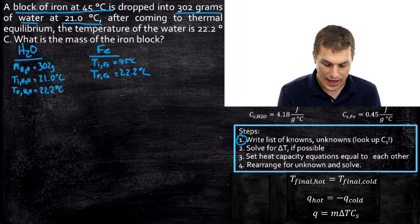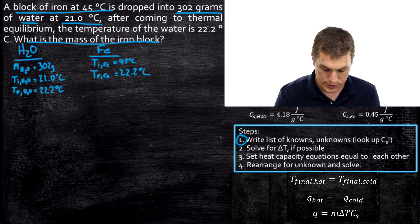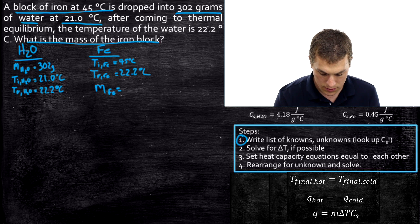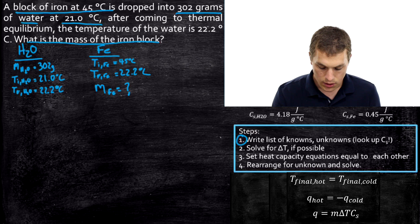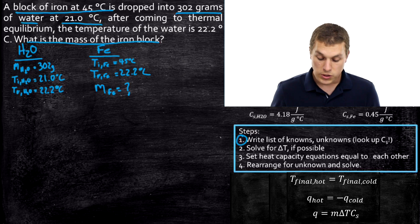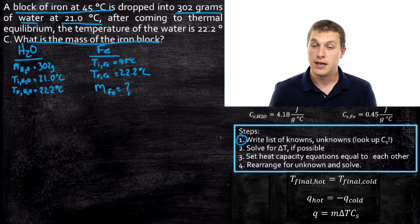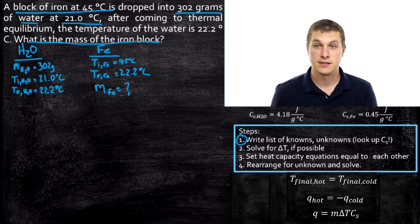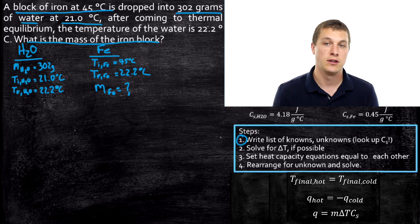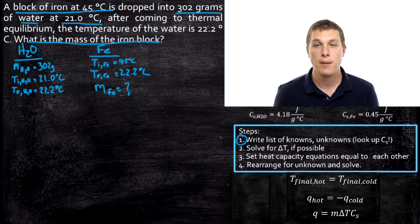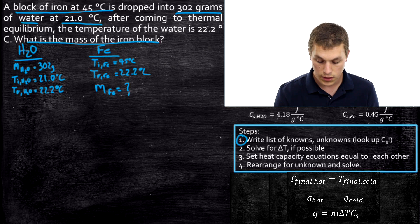Our unknown is the mass of the iron block. Step one also says to look up the heat capacities — the specific heat capacity for our materials isn't given in the problem, so we have to look them up in the textbook or on Google. I've written those down: the heat capacity of water and the heat capacity of iron.